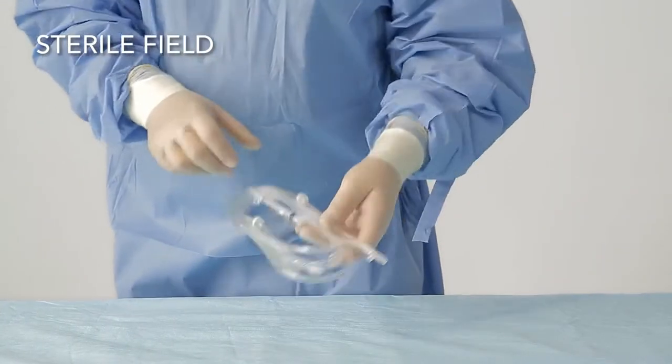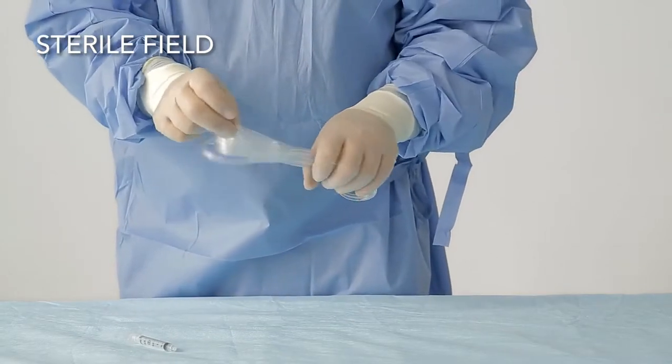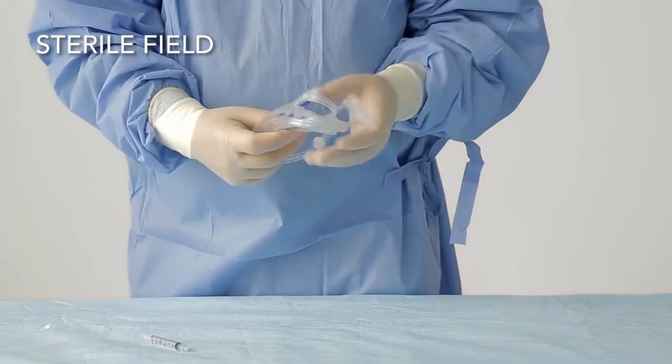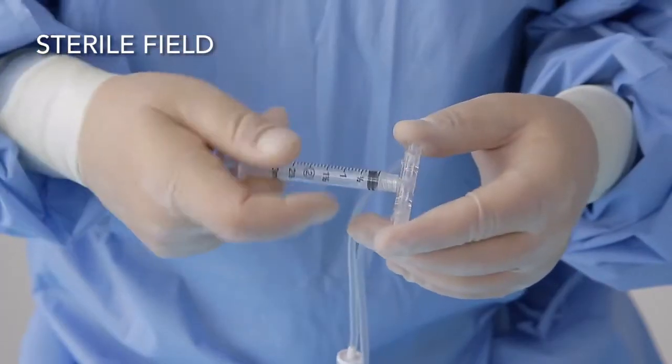Now a sterile assistant or urologist can assemble the unit. Remove plastic band, identify the manifold and attach syringe tightly to the manifold.